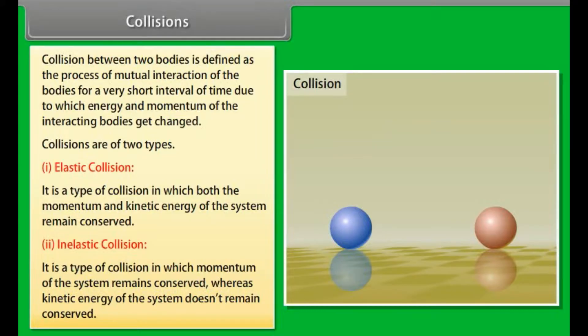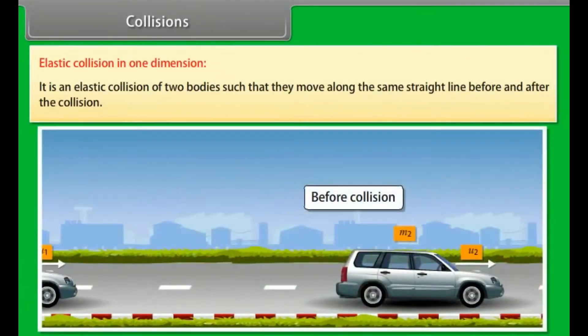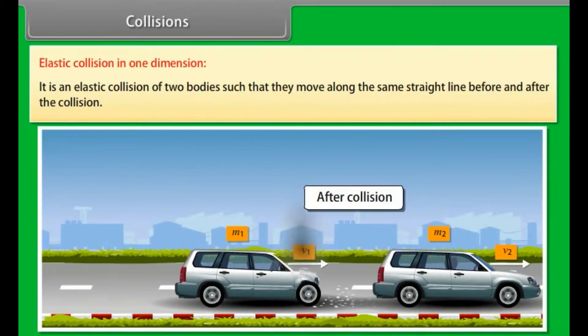Elastic collision in one dimension. It is an elastic collision of two bodies such that they move along the same straight line before and after the collision.